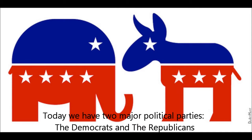Today we have two major political parties, the Democrats and the Republicans. But these haven't always been around. To understand these parties and how they originated, we need to know where they came from. Let's take a trip back to 1796 and start piecing some information together.